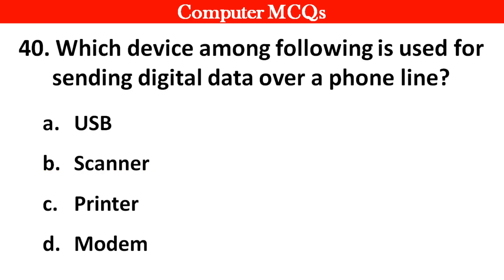Next question: Which device amongst the following is used for sending digital data over a phone line? Options A. USB, B. Scanners, C. Printers, D. Modem. Right answer is option D: Modem.